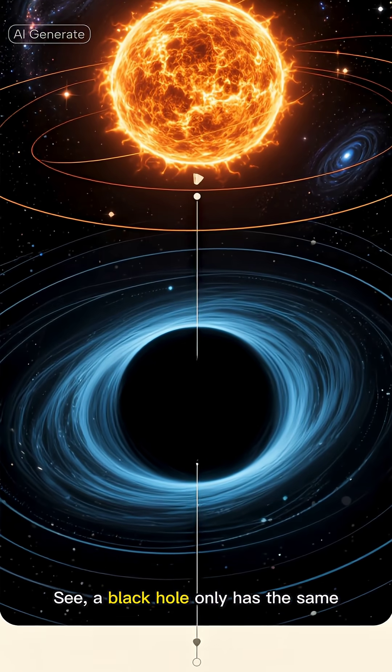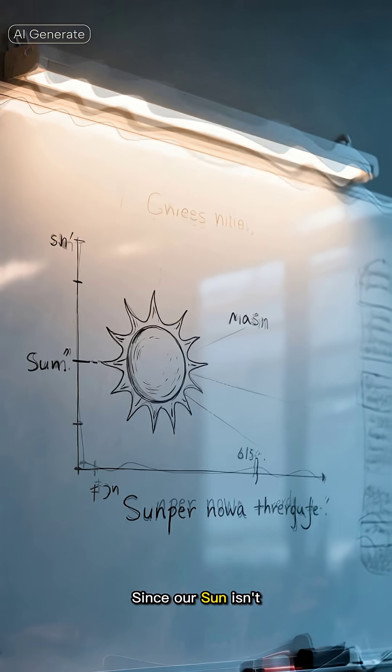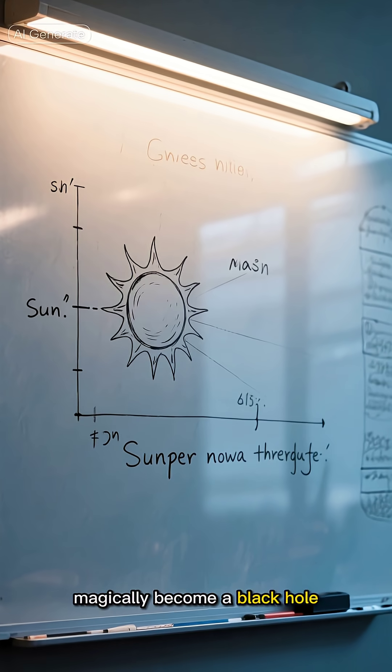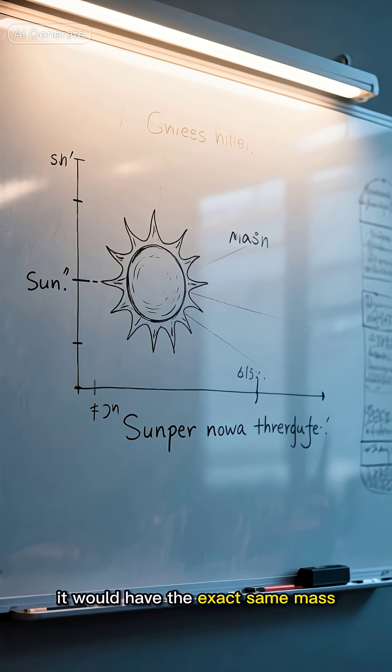See, a black hole only has the same gravitational pull as the star it came from. Since our sun isn't massive enough to go supernova, if it did magically become a black hole, it would have the exact same mass.